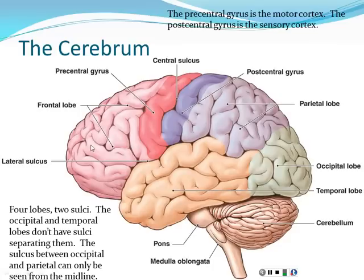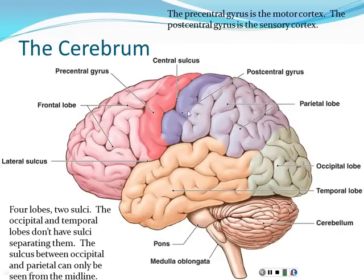This is where some of the fanciest things the brain does happen. The interconnections between neurons that coat the surface of the brain are really what give us our intelligence. Because there are so many neurons and they're so connected to one another, it allows us to do all the fancy things we're able to do. The cerebral cortex has four lobes: the frontal lobe in the front, the parietal lobe in the middle at the top, the occipital lobe in the back, and the temporal lobe on the sides.